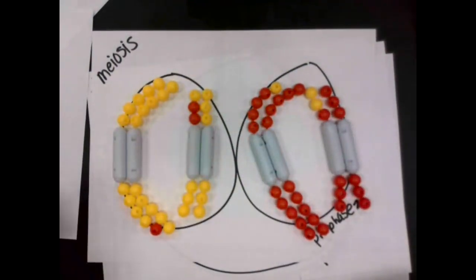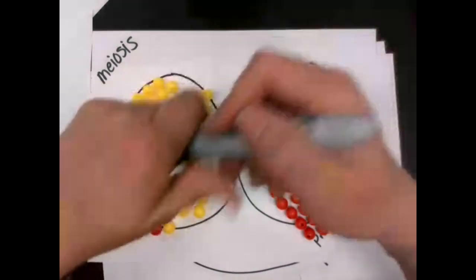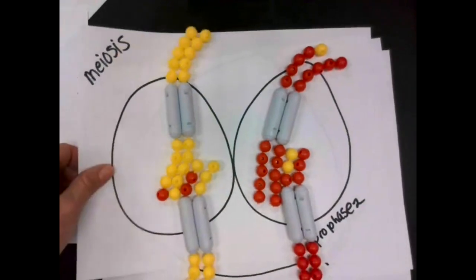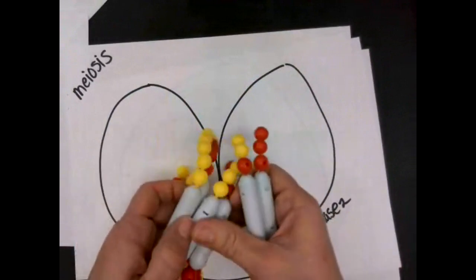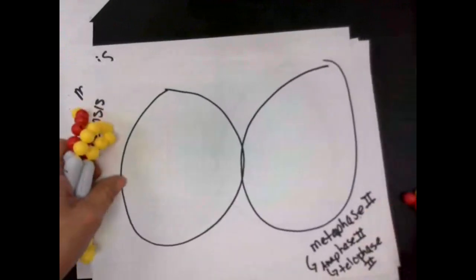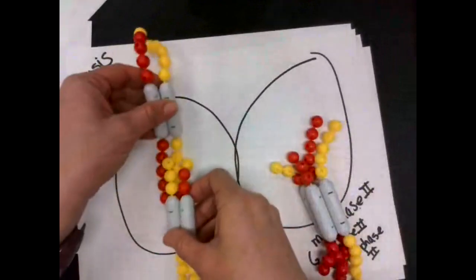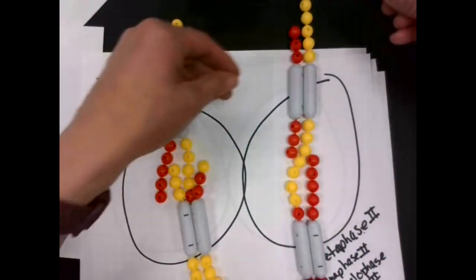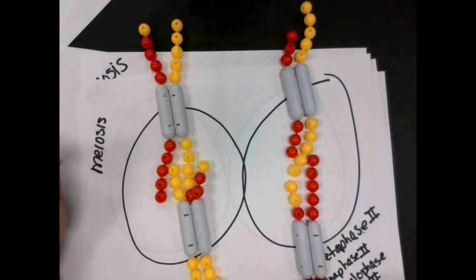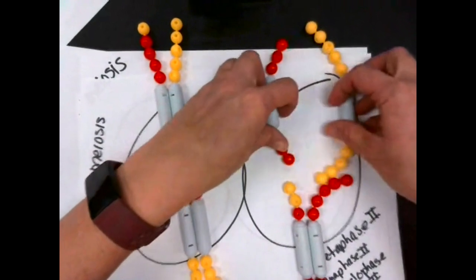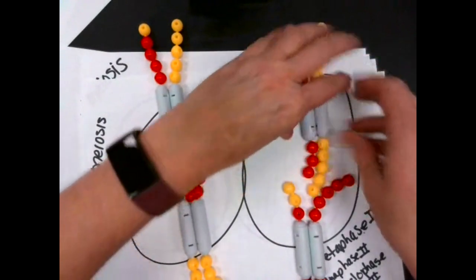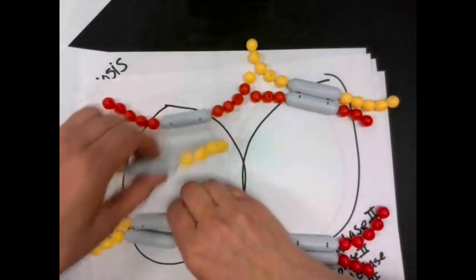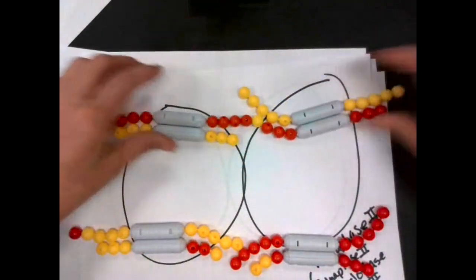Then we're going to go into metaphase two. Those spindle fibers are going to attach and we're going to line up along the plate. In metaphase two they're going to meet in the middle. The spindles are then going to pull them to the sides again. So they line up again and meet in the middle, and the spindles are going to pull them to the sides and split these guys up — we're going to pull to the sides.